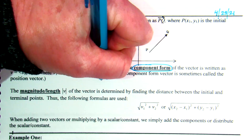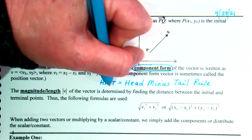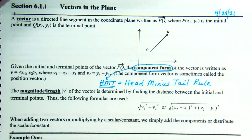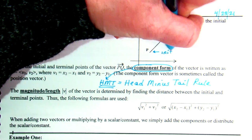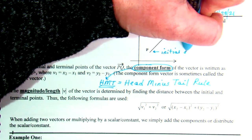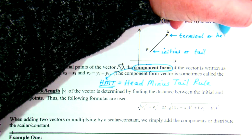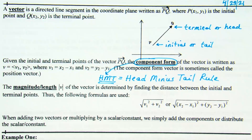The book uses — and I like the terminology — the head minus tail rule. In order to find component form, I like to refer to it as head minus tail rule, abbreviated HMT. The head of the vector is the arrow end; the tail is the initial end. The initial point can also be called the tail, and the terminal end can also be called the head of the vector.